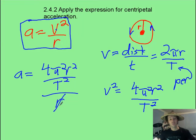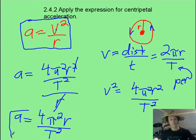And what do you know, one of our r's cancels, and we end up with the equation 4π²r divided by T², which is also a handy equation for acceleration, and it is in your data booklet as well.